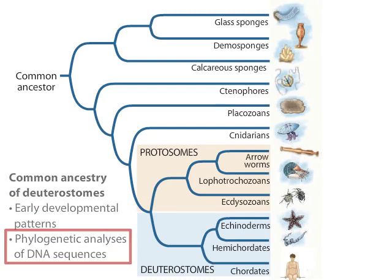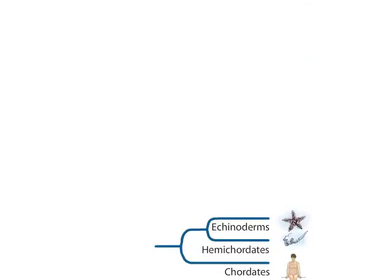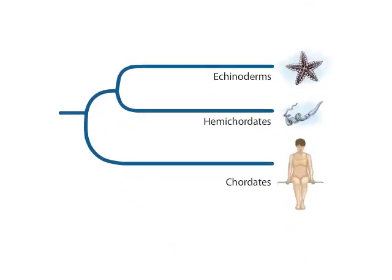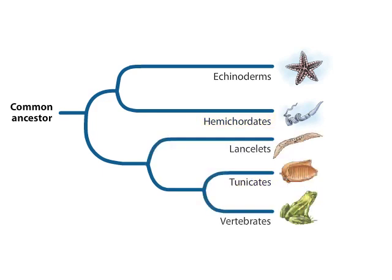The major groups of living deuterostomes comprise three distinct clades. These are the echinoderms, which are the sea stars, sea urchins, and their relatives; hemichordates, which are acorn worms and pterobranchs; and chordates. The chordates include lancelets, sea squirts and other tunicates, and vertebrates.